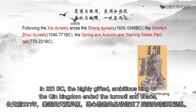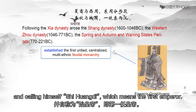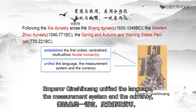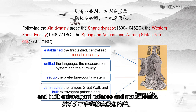In 221 BC, the highly gifted and ambitious king of the Qin Kingdom ended the turmoil and chaos, and established the first united, centralised, multi-ethnic feudal monarchy — the Qin Dynasty — calling himself Shi Huangdi, which means the first emperor. Emperor Qin Shi Huang unified the language, the measurement system, and the currency, set up the prefecture-county system, constructed the famous Great Wall, and built extravagant palaces and mausoleums.